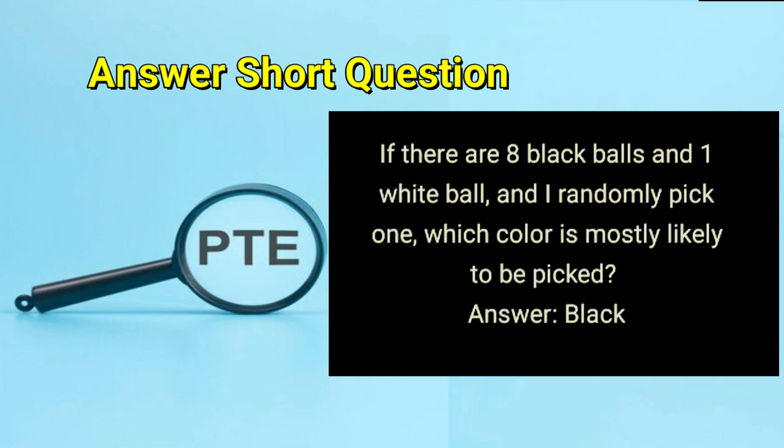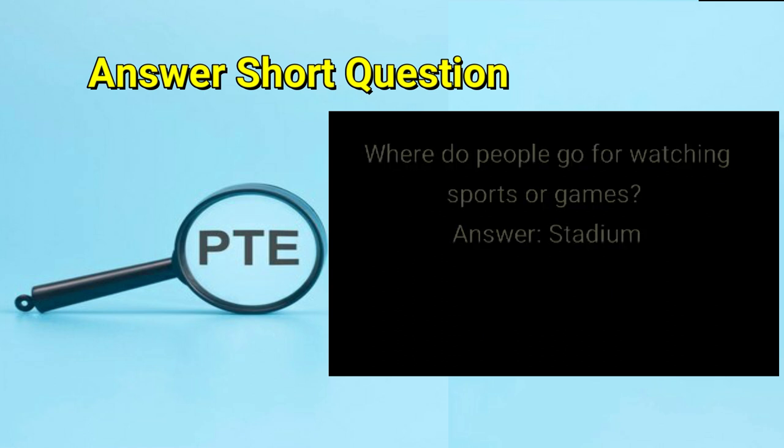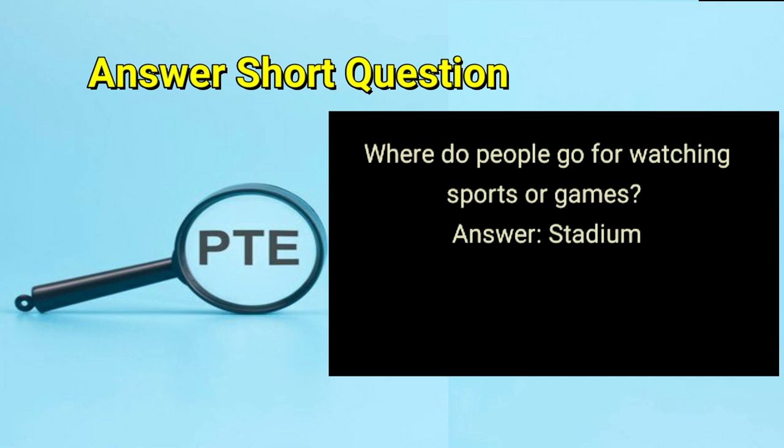If there are eight black balls and one white ball, and I randomly pick one, which color is most likely to be picked? Answer: black. Where do people go for watching sports or games? Answer: stadium.